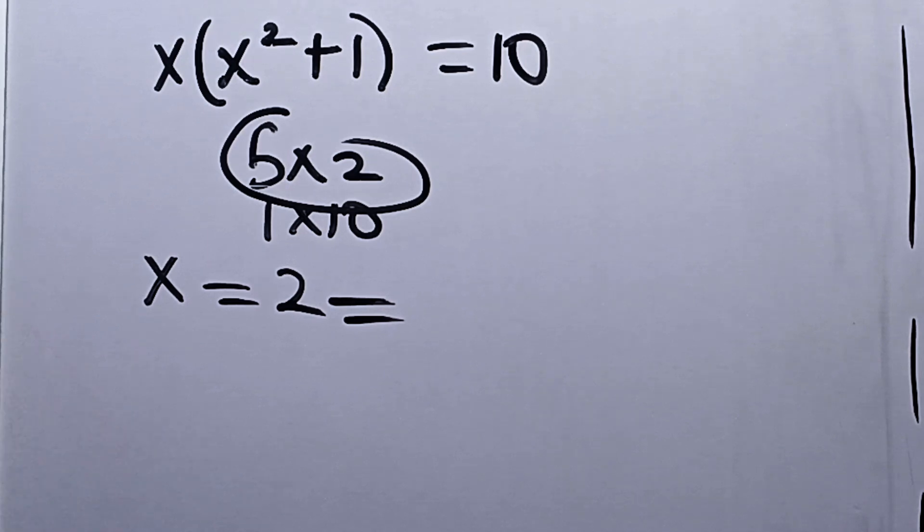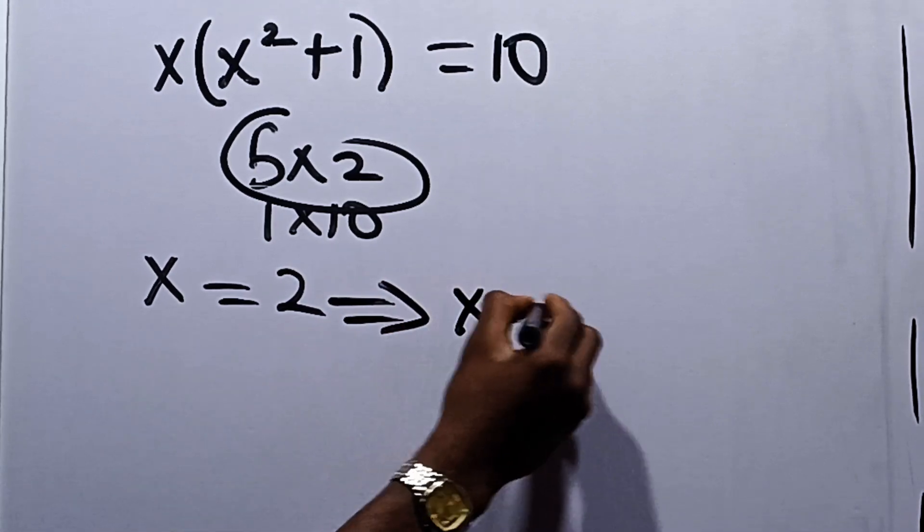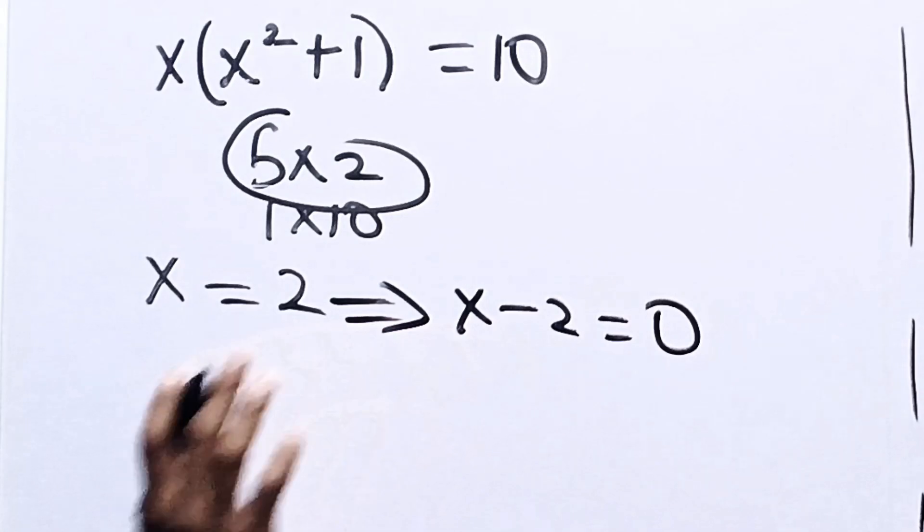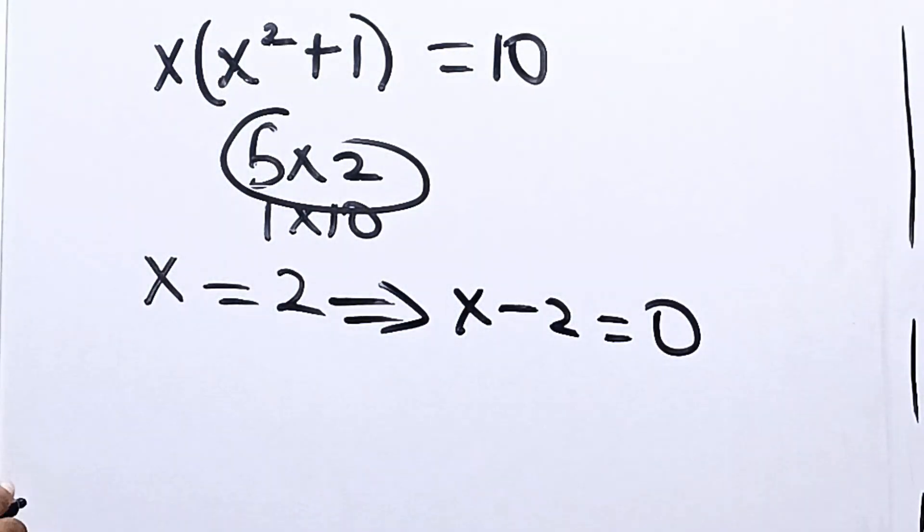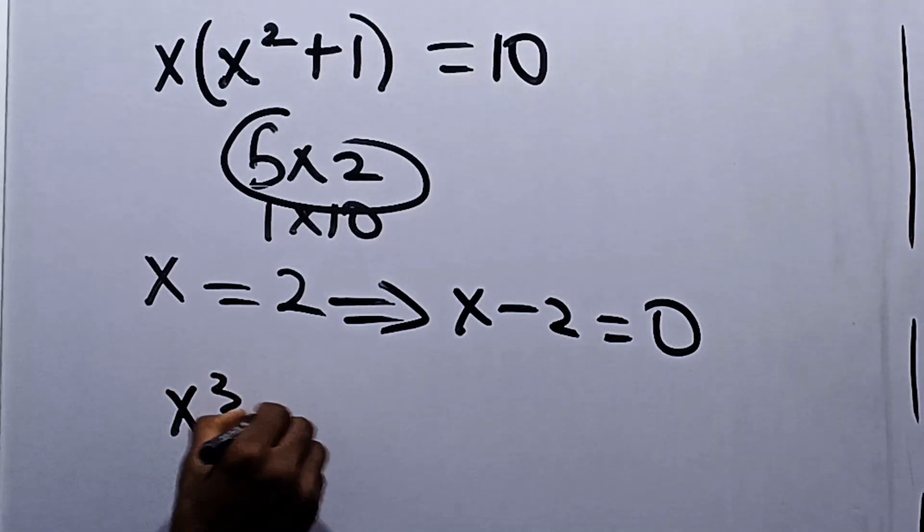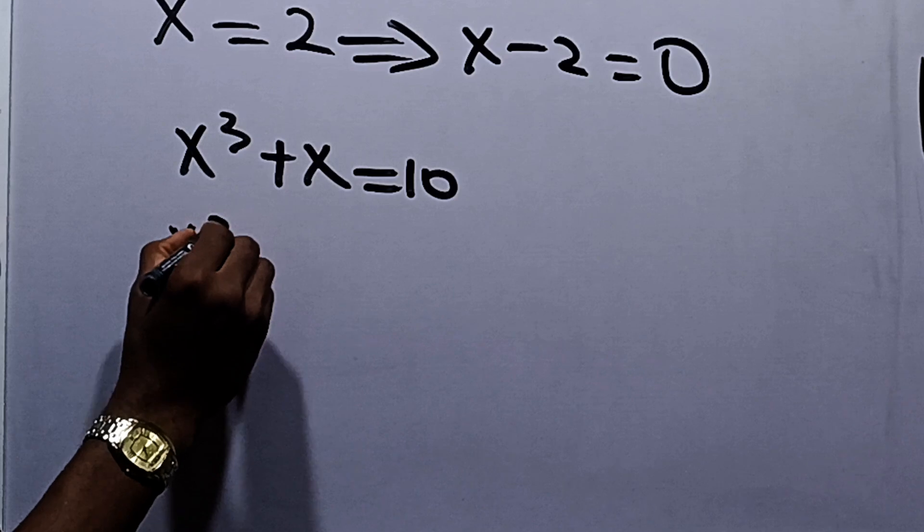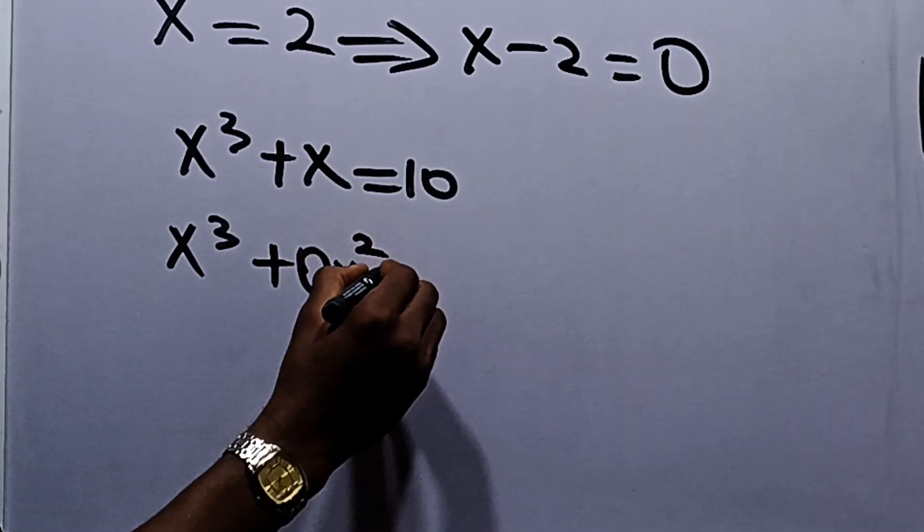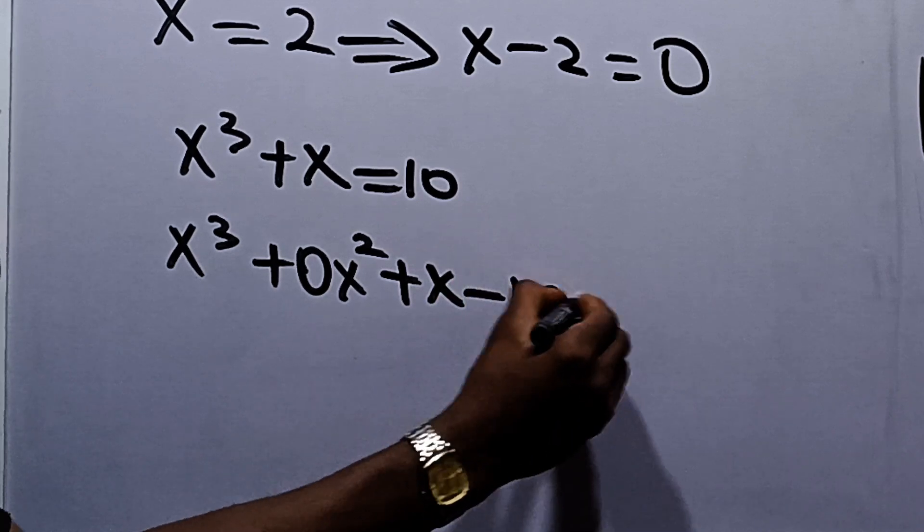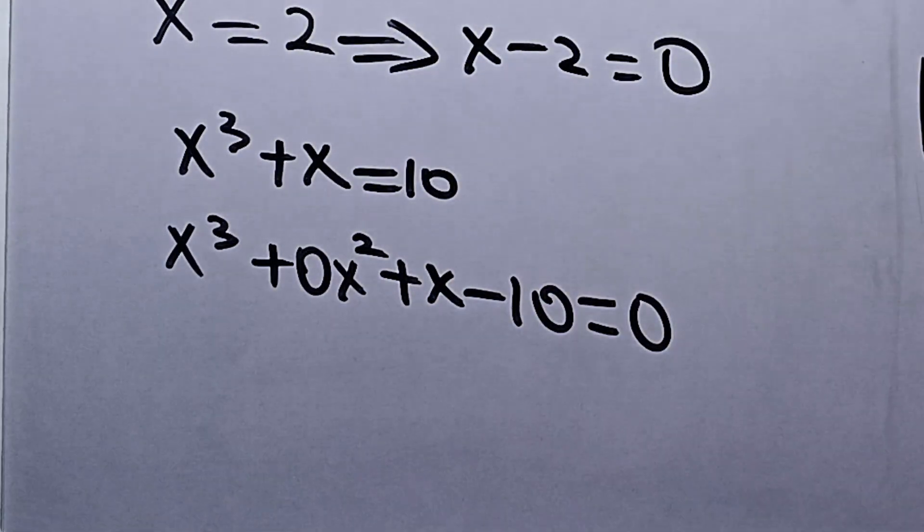Since x equals 2, it implies that x minus 2 equals 0. Now let's rewrite this equation. We have x cubed plus x equals 10. I can write this as x cubed plus 0x squared plus x minus 10 equals 0. This is our equation.